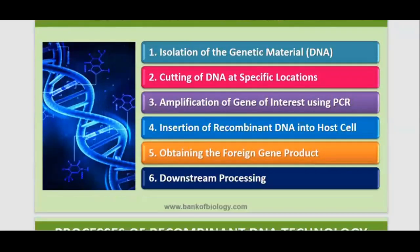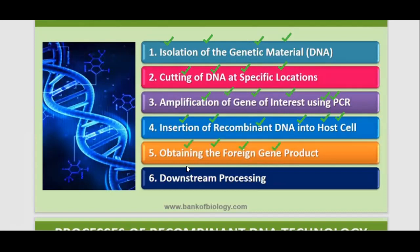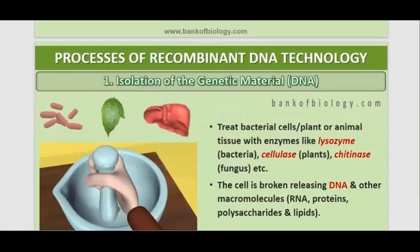The first process is the isolation of the genetic material, that is the DNA. We use various techniques for isolating this genetic material. Then we cut the DNA at specific locations, then we amplify the gene of interest using polymerase chain reaction technology. Then we insert the recombinant DNA into the host cell, obtain the foreign gene product, and perform downstream processing.